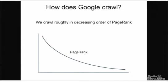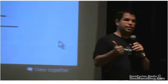But before we talk about how you rank higher in Google, we need to learn a little bit about how Google works. PageRank — and it's not that complicated. We crawl roughly in order of PageRank. That means the more PageRank you have, the faster you're likely to be found, the deeper we'll crawl on your site, the more often we'll visit your pages to see if they've been refreshed.